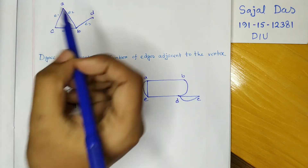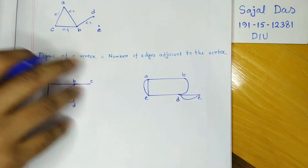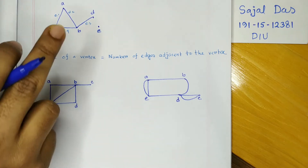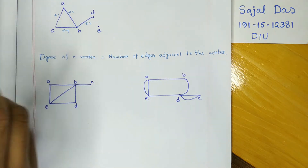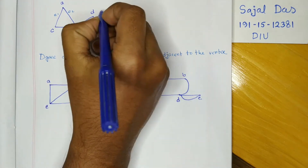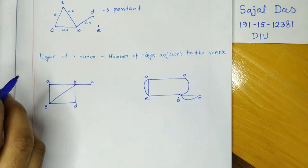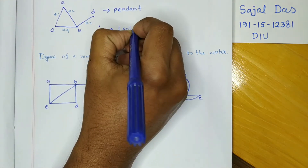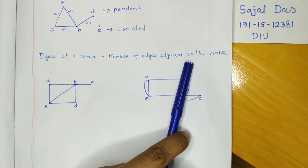Now I modified the graph and drew another vertex e. In this version, vertex a has two edges e1 and e2, but d has only one edge and e has no edges. If a vertex has only one edge it is called a pendant — so d is called a pendant. If a vertex has no edges then it is called isolated — so e is called isolated.